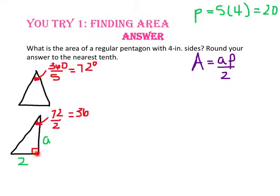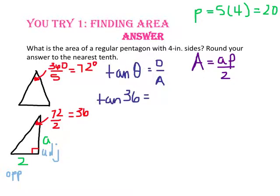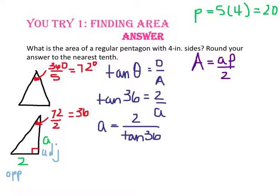Since this side is opposite our 36 degree angle and this is our adjacent side, we'll use the tangent ratio. We'll substitute 36 degrees in for theta, 2 for the opposite side, and a for the adjacent side. Since the variable is in the denominator, the variable and tangent 36 will switch places and divide. So the length of the apothem is 2 divided by tangent 36, or approximately 2.8 inches.